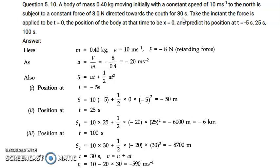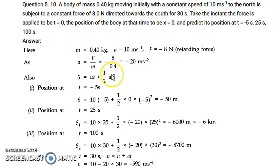We have: m = 0.4 kg, u = 10 m/s. Taking the north direction as positive, the force towards south is negative, so F = −8 N. Using F = ma, acceleration a = F/m = −8/0.4 = −20 m/s².